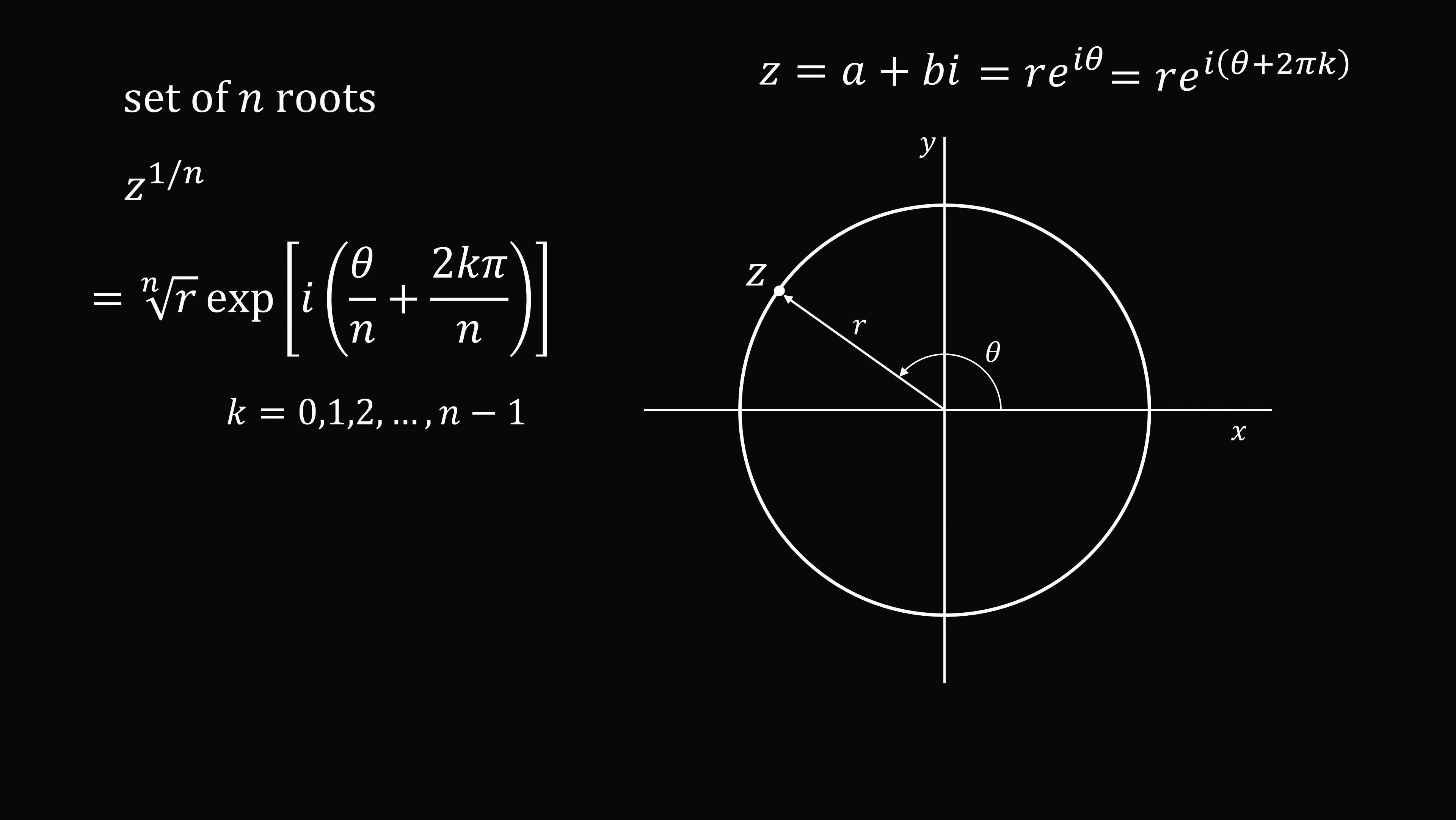The n roots also have a nice graphical interpretation. They will be the endpoints of a regular n-gon. Now if you set k is equal to 0, you get the principal value of the nth root of z.